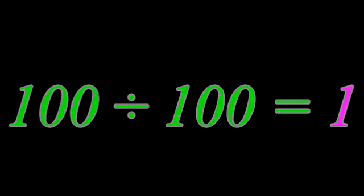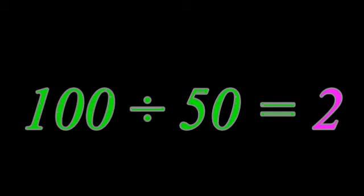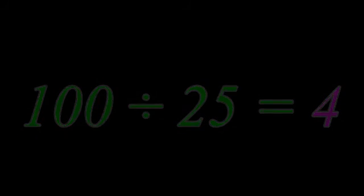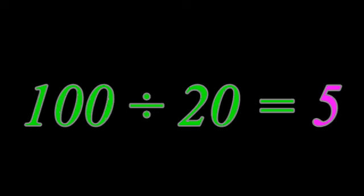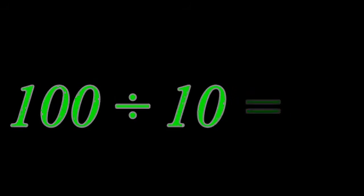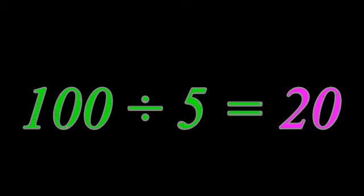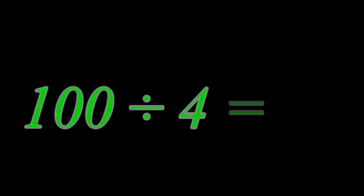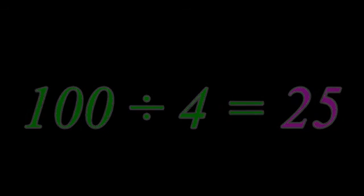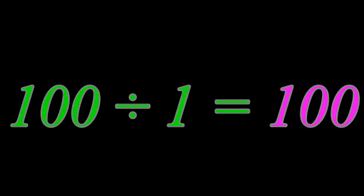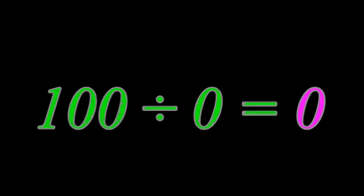100 divided by 100 equals 1. 100 divided by 50 equals 2. 100 divided by 25 equals 4. 100 divided by 20 equals 5. 100 divided by 10 equals 10. 100 divided by 5 equals 20. 100 divided by 4 equals 25. 100 divided by 2 equals 50. 100 divided by 1 equals 100. 100 divided by 0 equals 0.